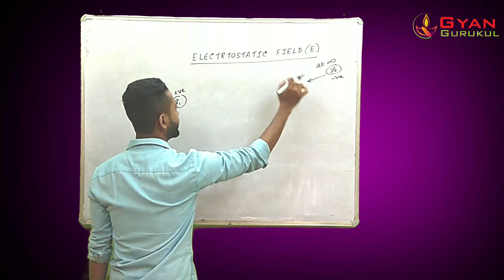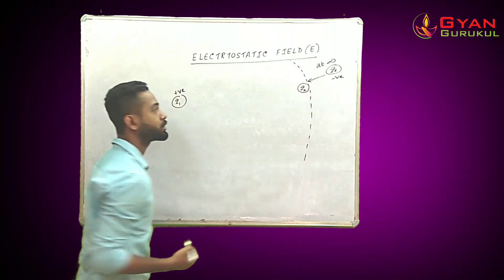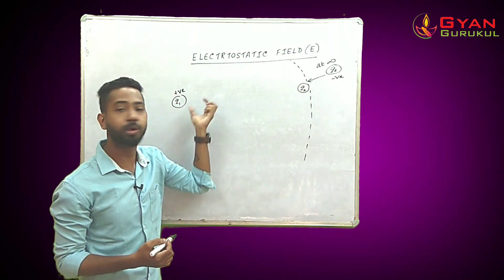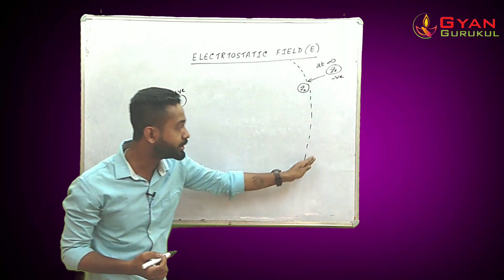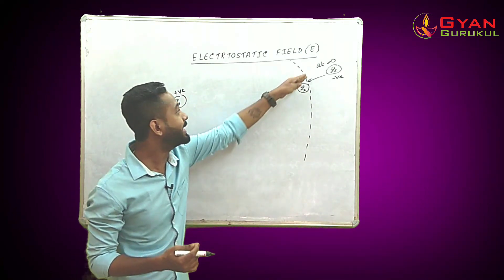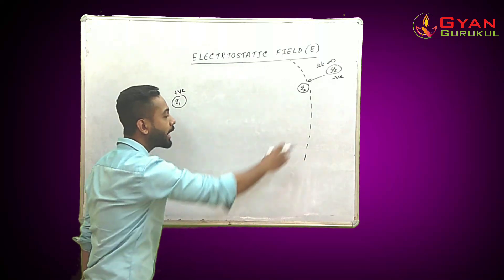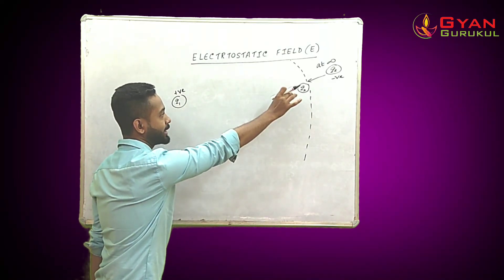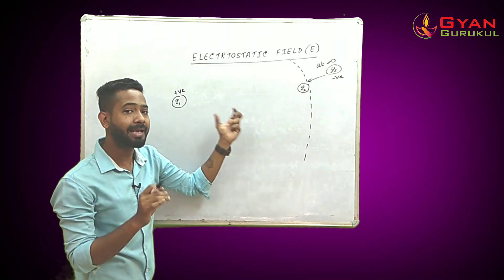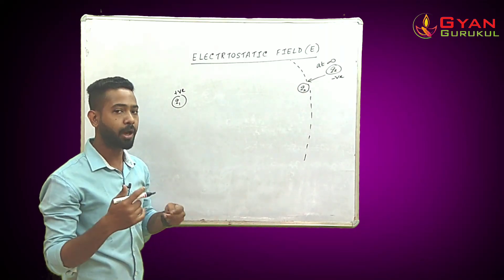As we start bringing q2 closer to q1, at a certain boundary region, q2 starts experiencing an attractive force towards q1. That particular region around q1 where a secondary charge can feel a force of attraction or repulsion is known as the electrostatic field of the static charge.